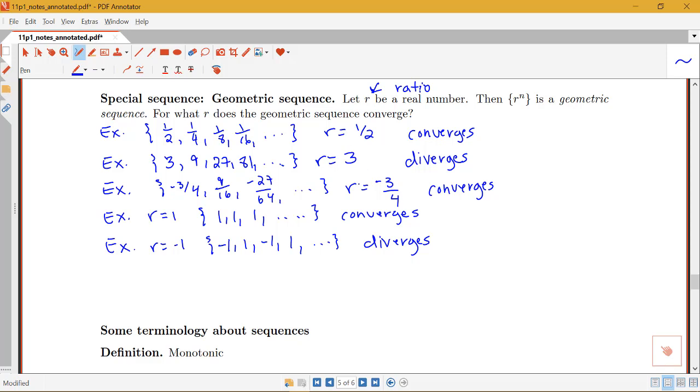Just looking at these examples, we're starting to get an idea for what values of r this sequence might converge and what values it will definitely diverge for, such as values bigger than one where it's definitely going to diverge. So let's look at our summary here.